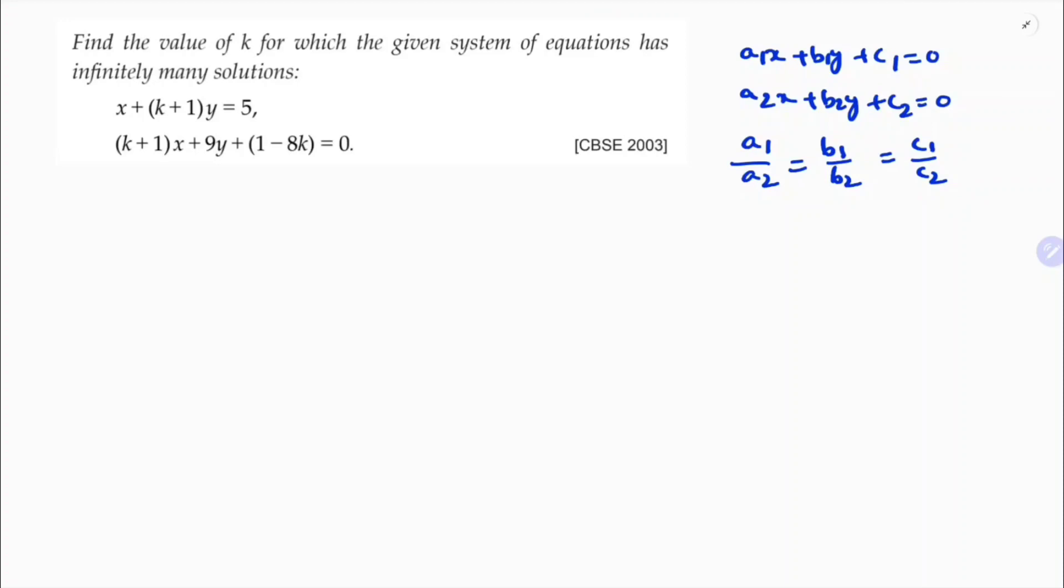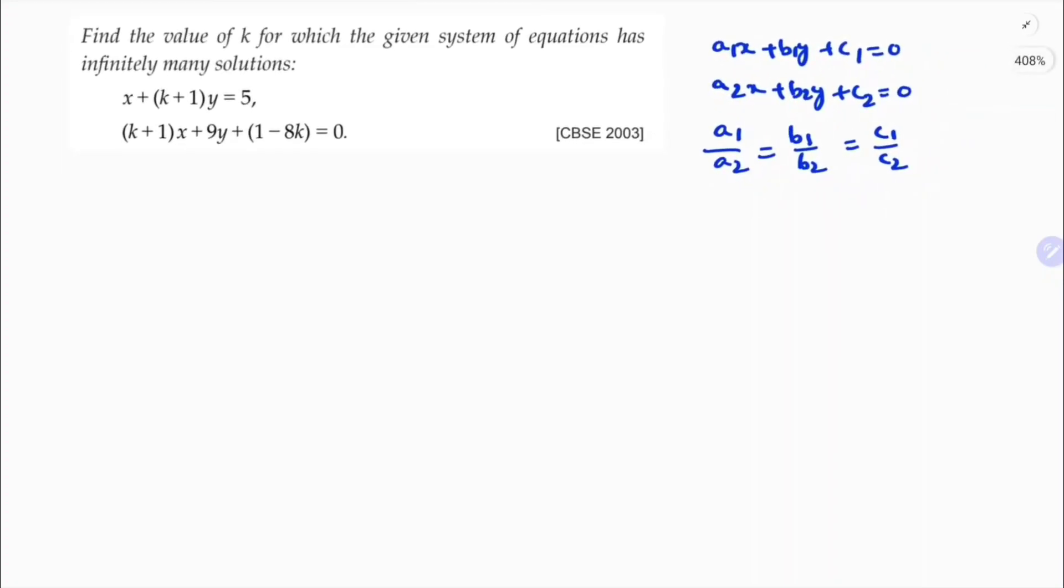Now here first I will write the two equations in the standard form: x plus (k+1)y minus 5 equals 0, and (k+1)x plus 9y plus (1-8k) equals 0.